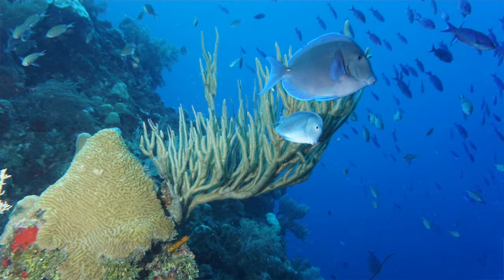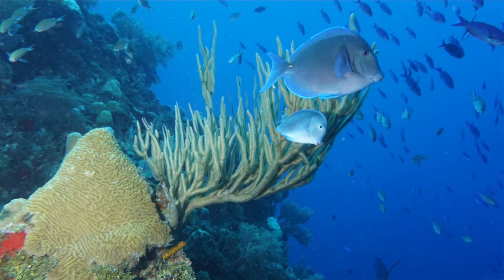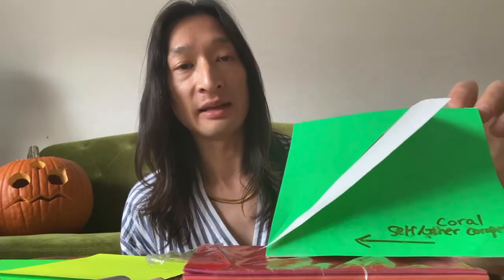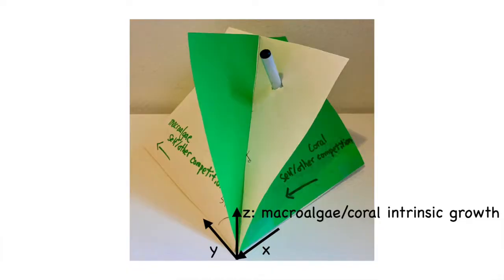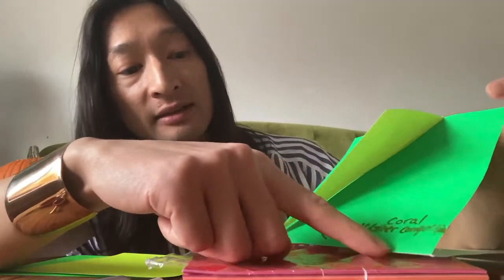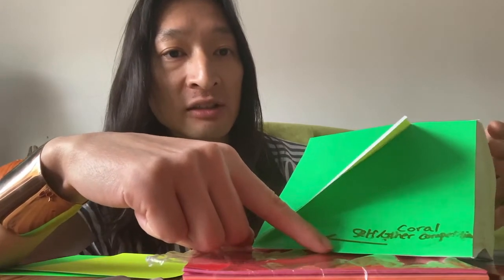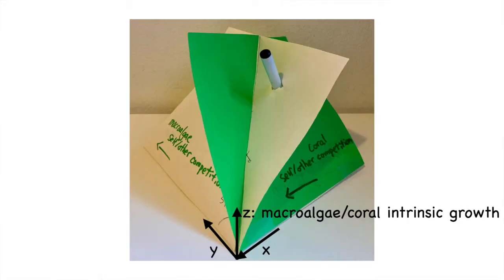First you need a model and a way to visualize how this kind of regime shift works. These planes are the stability planes for each species in xyz-axis space, and this is the result of the Lotka-Volterra equation. Three essential parameters determine the differences between systems: along the x-axis, the coral self-over-other competition parameter — how much corals compete among themselves versus with macroalgae; the y-axis is the macroalgae self-over-other competition; and the third axis is the macroalgae-over-coral intrinsic growth ratio.